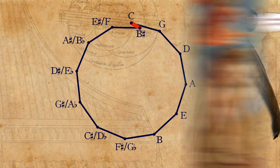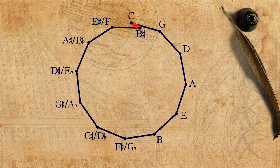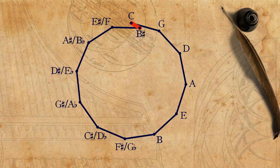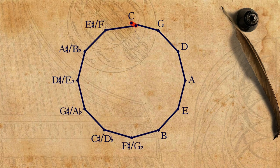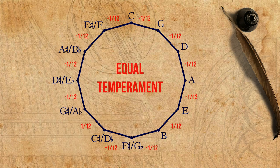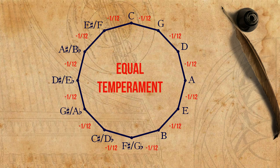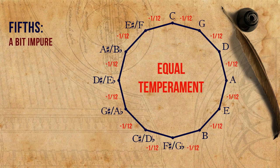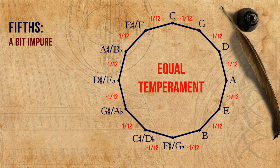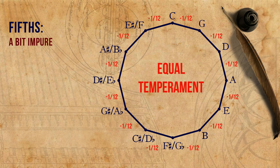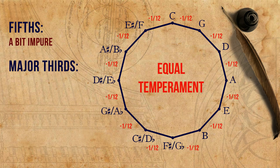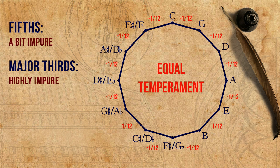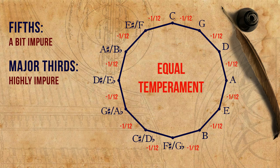Let us return to equal temperament. The way it deals with this defect is by dividing this additional little interval of a comma between all the fifths, so that each fifth is smaller by a twelfth of it. We end up with fifths that are a bit impure. But what about the other intervals? After the fifths, the major thirds are next in importance when discussing temperaments, and in this case they are also impure. In fact, they are more impure than the fifths.